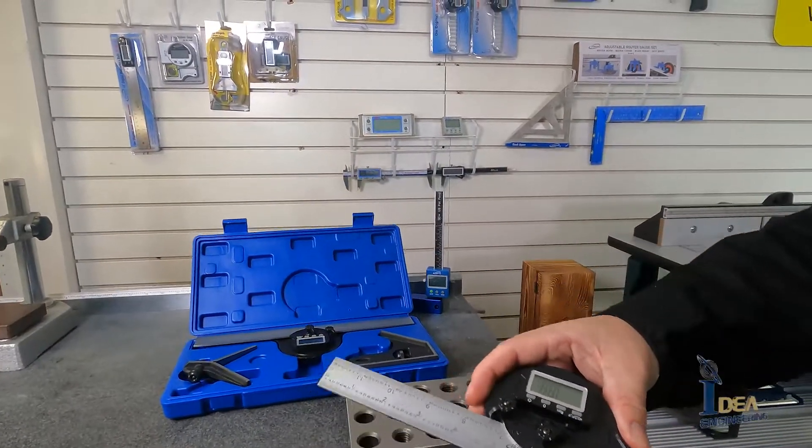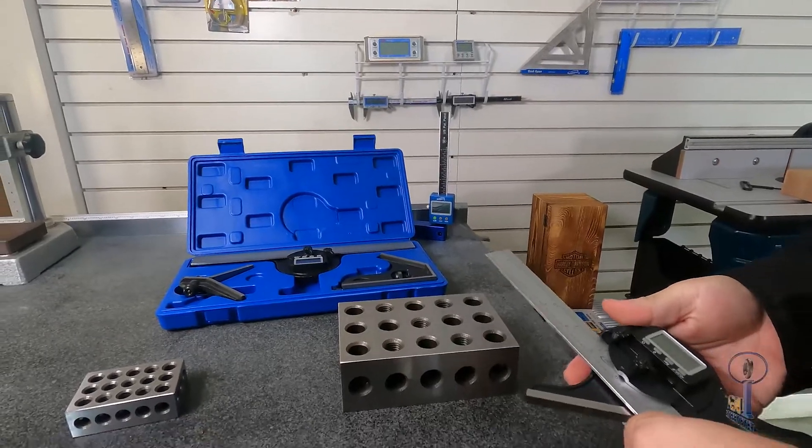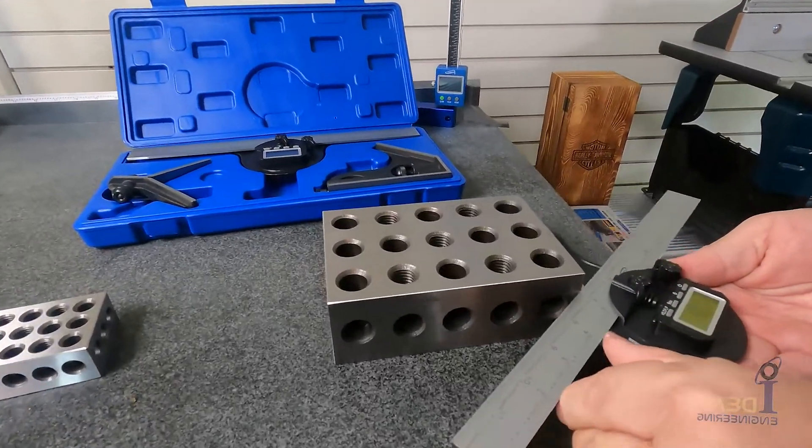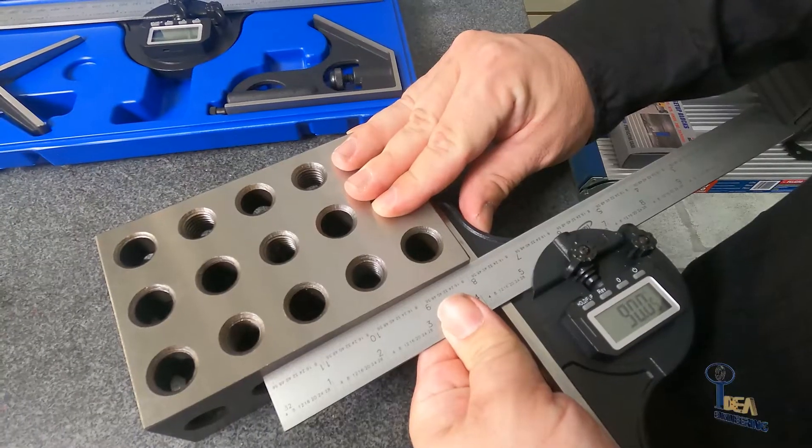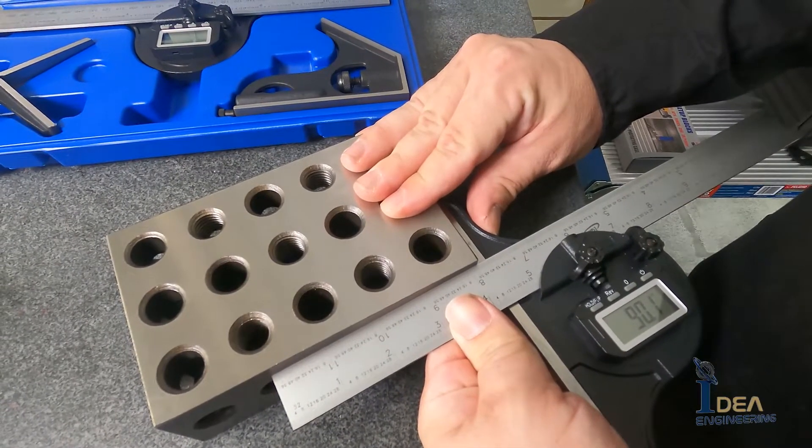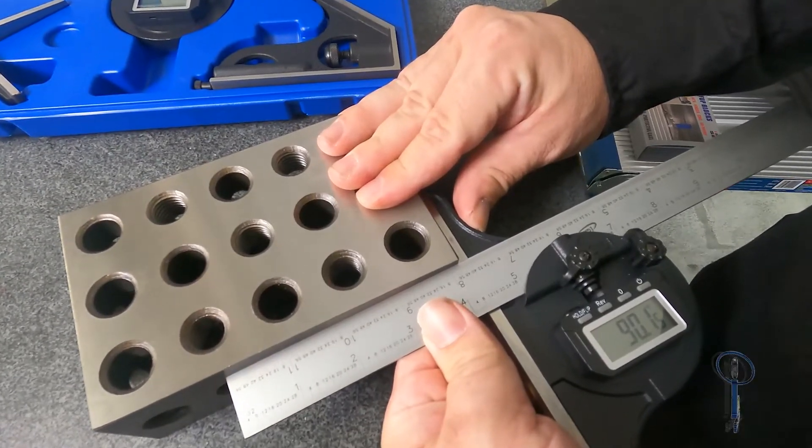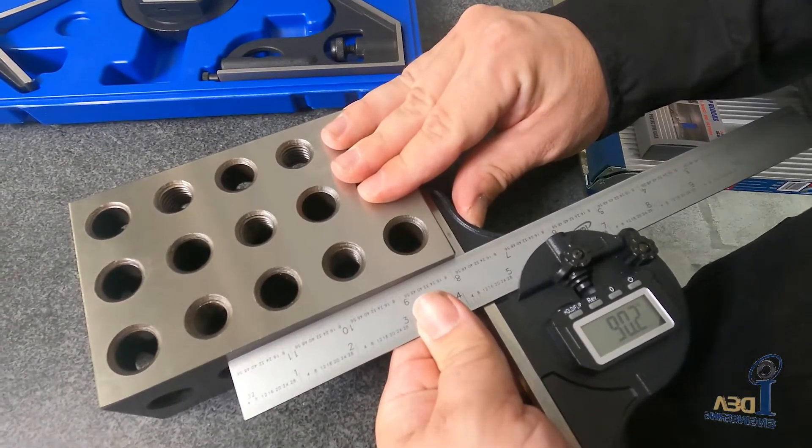And let's check the accuracy of the angle here. So we have a gauge block. So if we take this and put it against the gauge block. I can't hold my hand still. All right, so we see we've got 90.1 degrees there. So that's within the 0.2 degree accuracy.